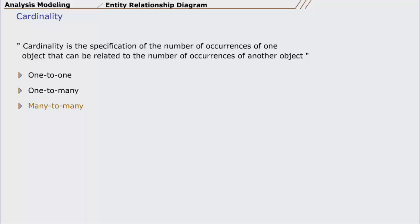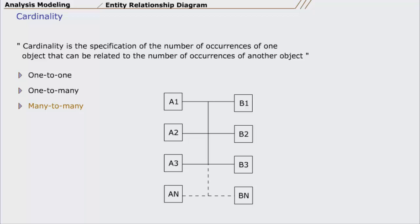Many to many relationship means an occurrence of object A can relate to one or many occurrences of B, while an occurrence of B can relate to one or more occurrences of A.